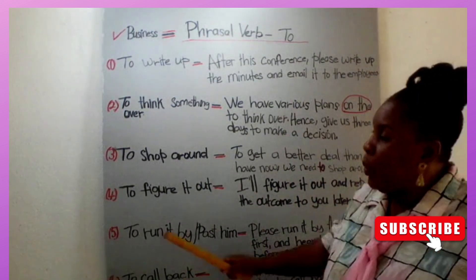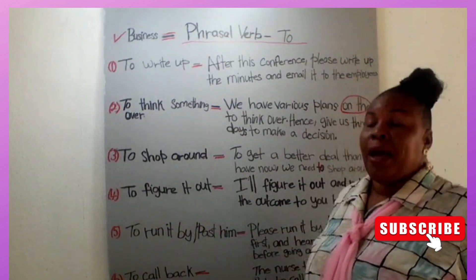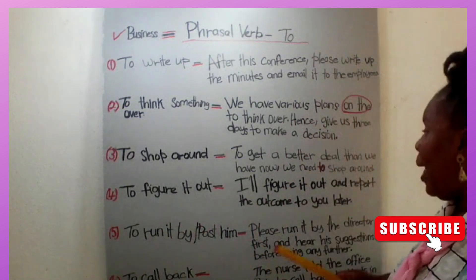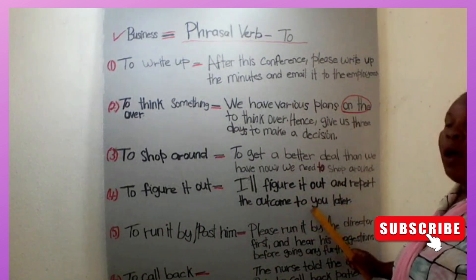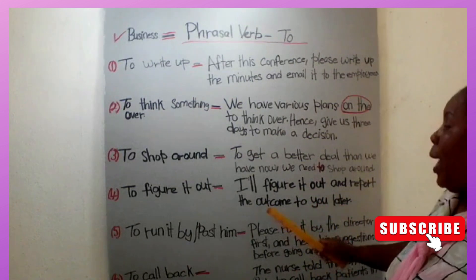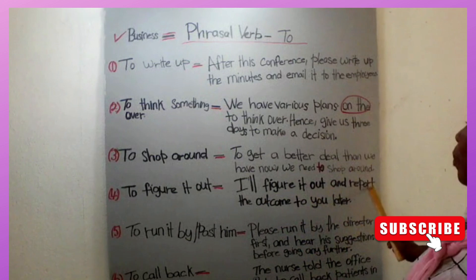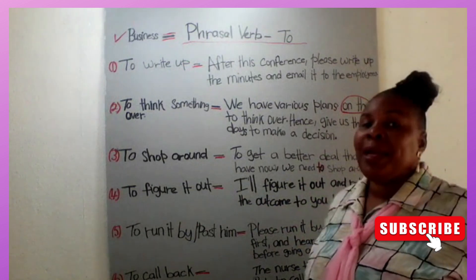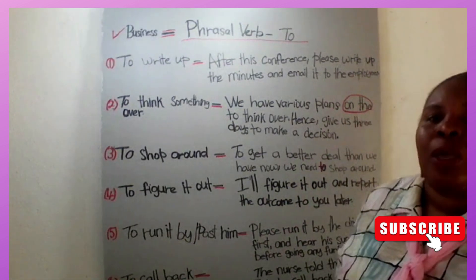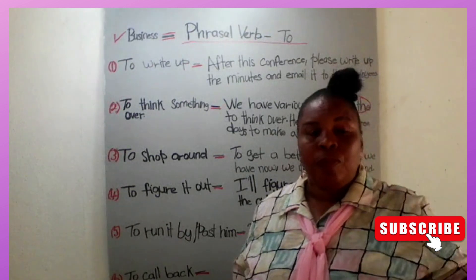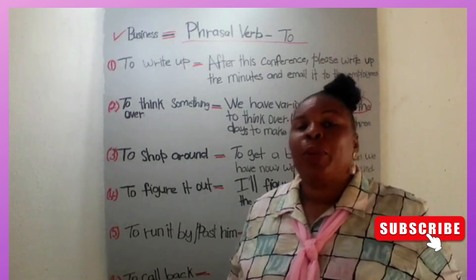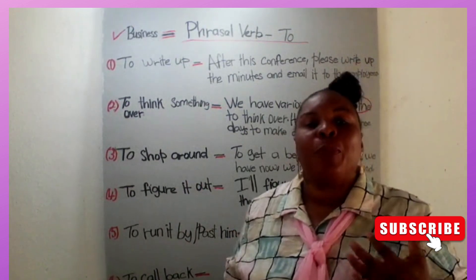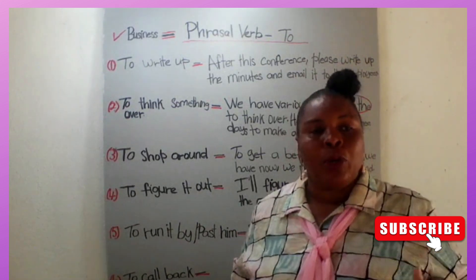Number four: to figure it out — to think it over, to reflect. In a sentence: 'I'll figure it out and report the outcome to you later.' Your boss might ask you to do a project or come up with a new idea, and you tell him or her you will figure it out and report the result to them at a later time.